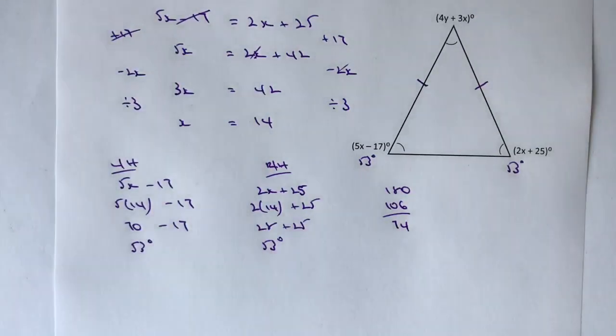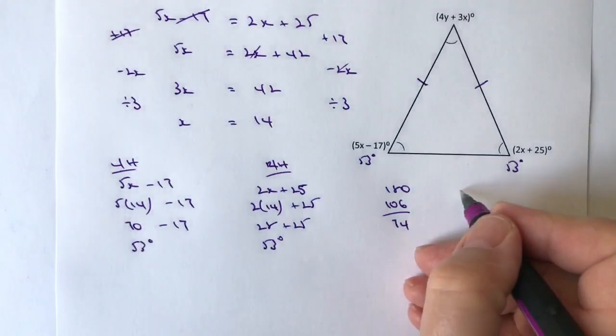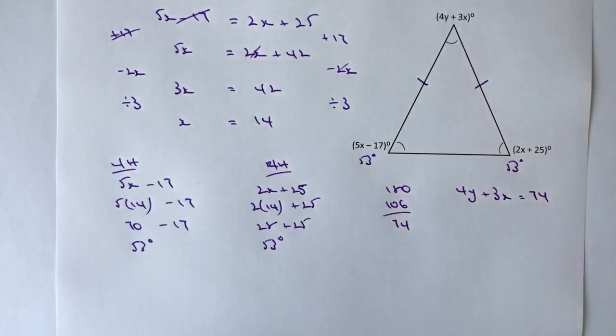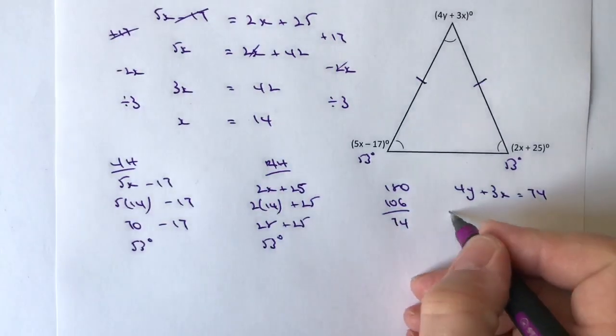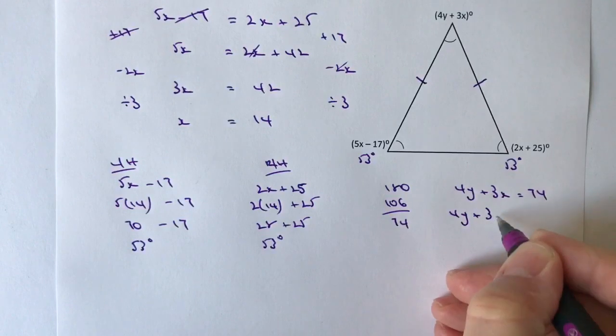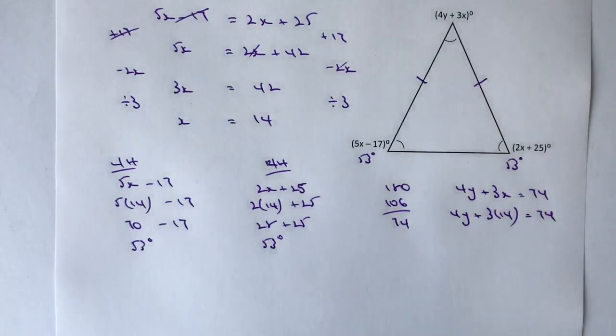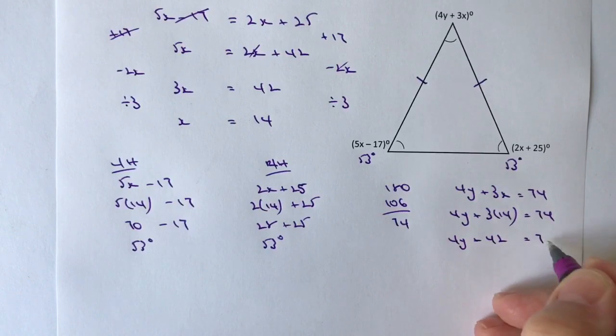I can now say that 4y plus 3x equals 74 degrees. Then it's a matter of taking the value of x that I know and solving for y. So I've got 4y plus 3 times 14 equals 74. 3 times 14 is 42, so I've got 4y plus 42 equals 74.